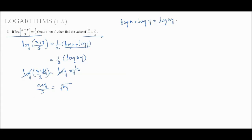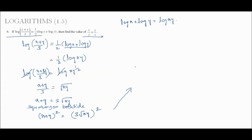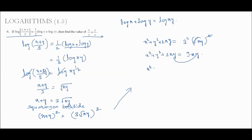So x plus y equals 3 times root of xy. Squaring both sides: (x plus y) whole square equals 9xy. Expanding: x squared plus y squared plus 2xy equals 9xy, so x squared plus y squared equals 9xy minus 2xy, which equals 7xy.